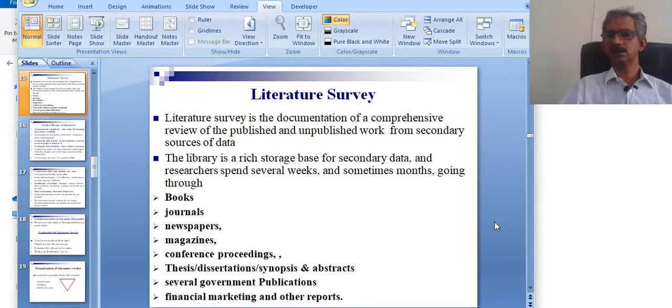The literature survey is the documentation of a comprehensive review of the published and unpublished work from secondary sources of data. The library is a rich storage base for secondary data, and researchers spend several weeks and sometimes months going through books, journals, newspapers, magazines.